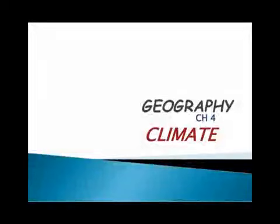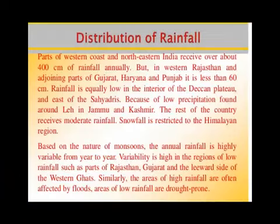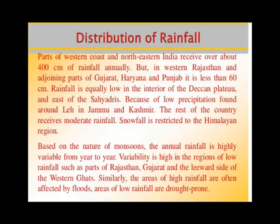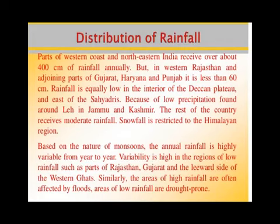We are describing the fourth lesson of geography, that is climate — specifically the advancing monsoon season. In the previous video we discussed the amount of rainfall, which is different in different parts of India. For example, the heavy rainfall areas are the Western Ghats and the north-east states of India, while the Leh and Thar Desert regions are rain shadow areas that receive less rain.